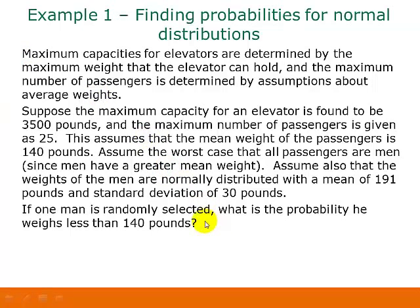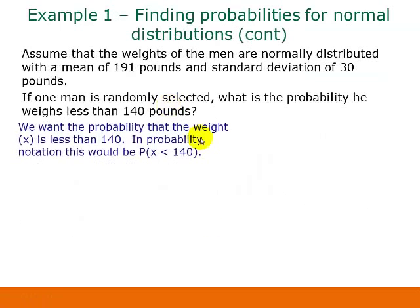So if one man is randomly selected, what is the probability he weighs less than 140 pounds? So we want the probability that the weight x is less than 140. In probability notation, this would be P(x < 140).